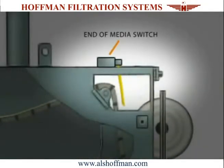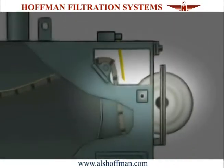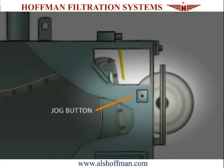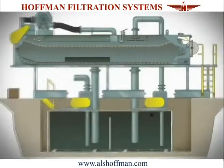An end-of-media switch is used to monitor the status of the media roll, actuating when the media roll is emptied. This can be used to sound an alarm or cease the filter supply pumps. A jog button is provided next to the media roll to allow technicians to manually index the flat wire belt during media roll replacement.